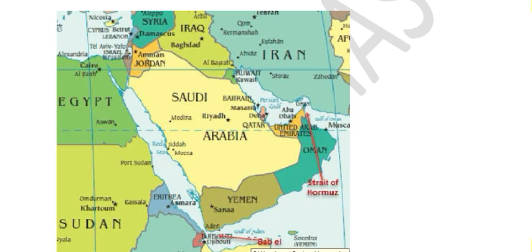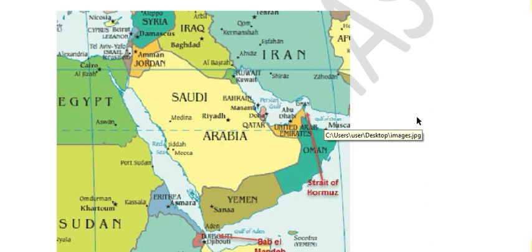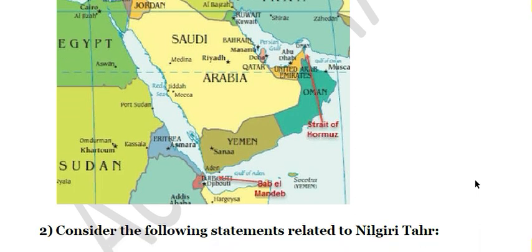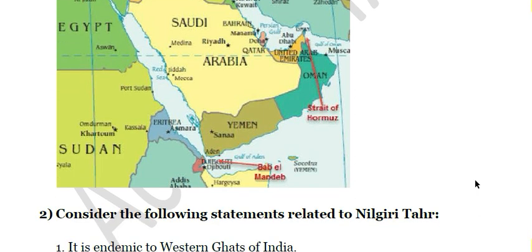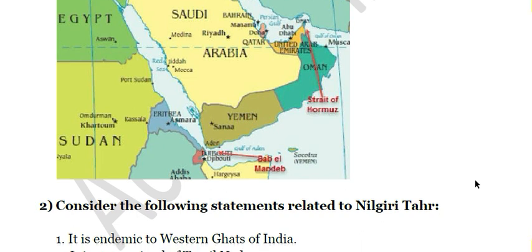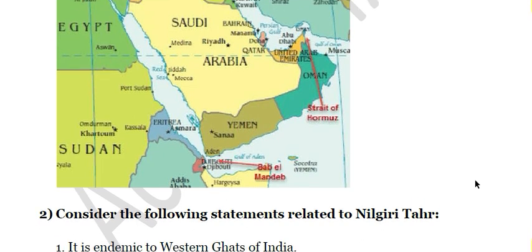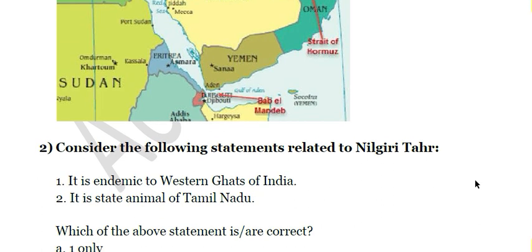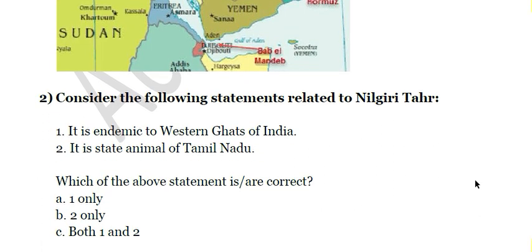Bab al-Mandab connects the Red Sea and Gulf of Aden. This is the Yemen region — Yemen is a civil war prone country with its capital at Sana'a. These are other African countries nearby. The Strait of Hormuz connects the Persian Gulf with the Gulf of Oman. You can see these details in an atlas; the Oxford Atlas is recommended for UPSC preparation since map-based questions are frequent.